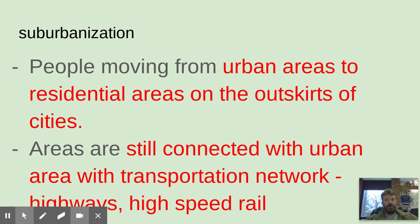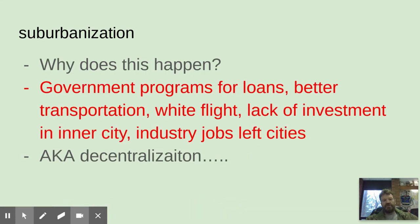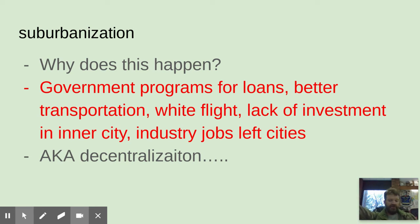There are all kinds of suburbs: Alton, Edwardsville, Swansea, Fairview Heights — all suburbs of St. Louis. Every city, especially in the developed world, has these. Why does this happen? There are government programs for loans. The bid-rent theory says the further you go from the core, the cheaper the land gets — you can buy a house further from the city for way less than land inside the city. There's also better transportation now.